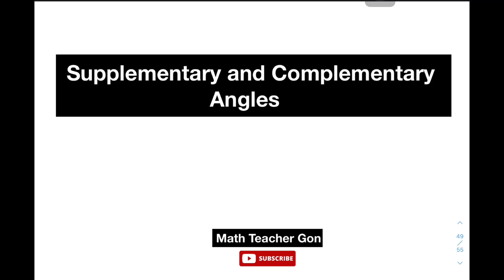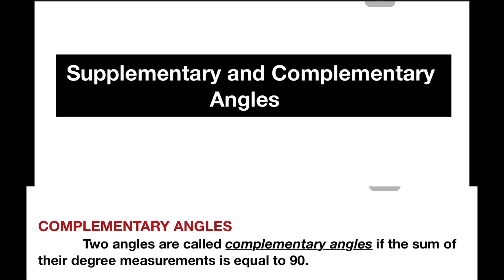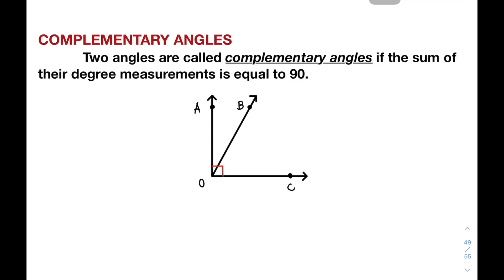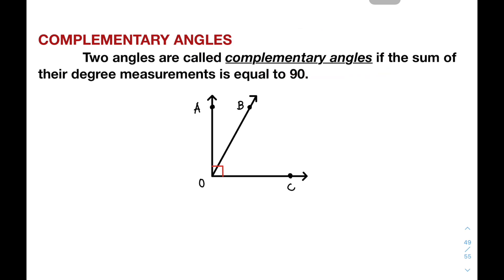Again, I am Teacher Gon. Let's do this topic. So what is meant by complementary angles? Two angles are called complementary angles if the sum of the degree measurements is equal to 90 degrees.